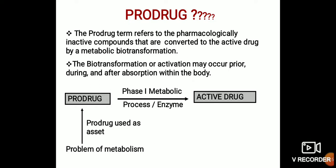In phase 1 metabolism, the prodrug is converted into the active drug by the help of enzymes. A prodrug is defined as a compound which undergoes biotransformation before exhibiting its therapeutic effect.